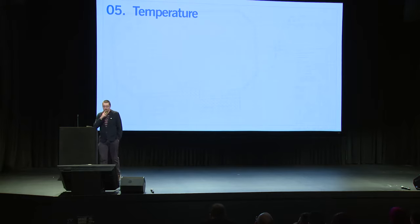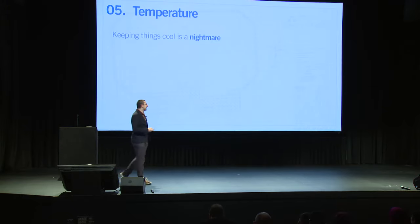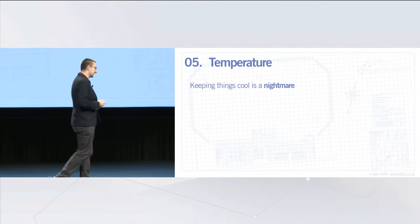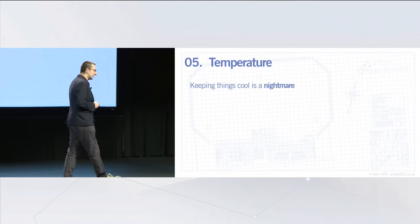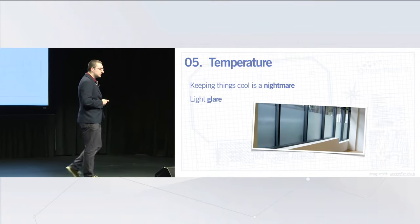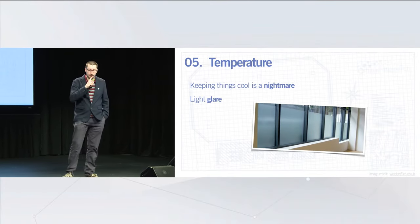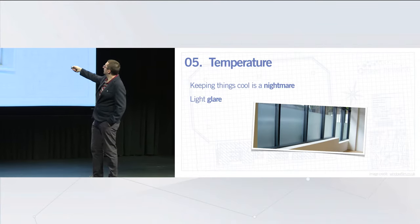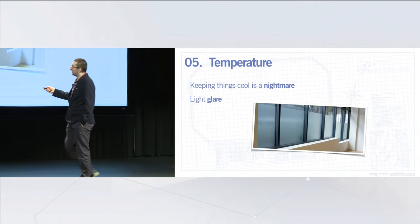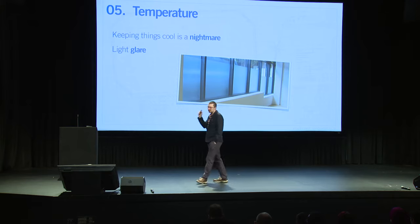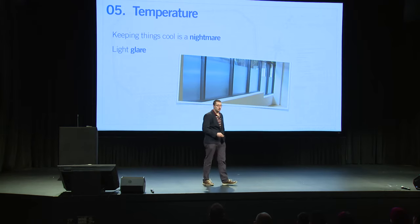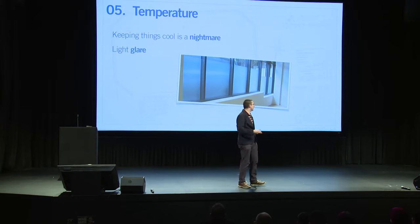Temperature: keeping things cool is a nightmare, an absolute nightmare. Something we perhaps didn't anticipate would be a problem is light glare from all the screens. We have windows all around the outside — all three sides. I really recommend looking at tinted or smoke film for windows that have glare. It's really inexpensive, and it also helps with cross-site security: if you're overlooked by other buildings, you can't see through it at all.